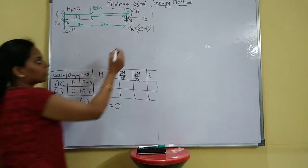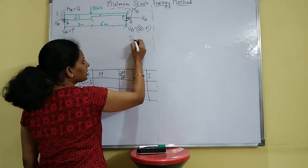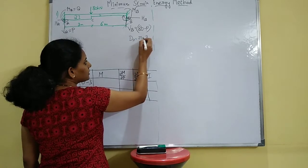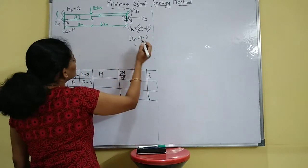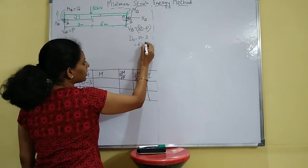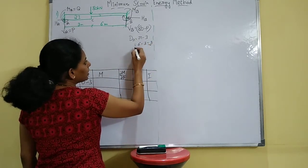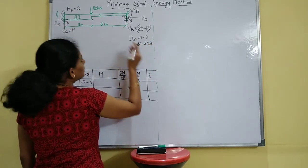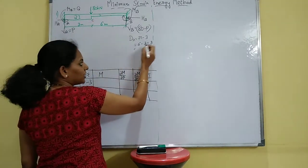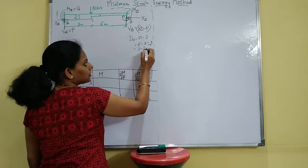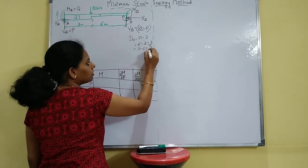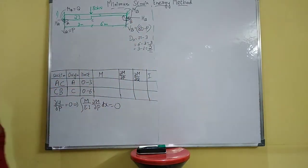First, find out static indeterminacy. DSI is equal to R minus 3, where R is 6, so 6 minus 3 equals 3. Here H_A and H_B can be considered as one force, so 3 minus 1 equals 2.